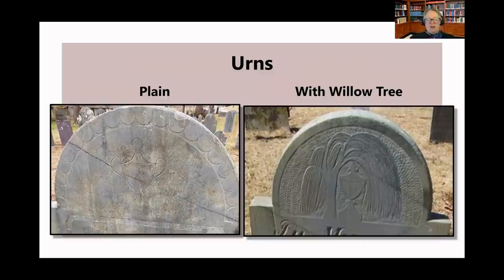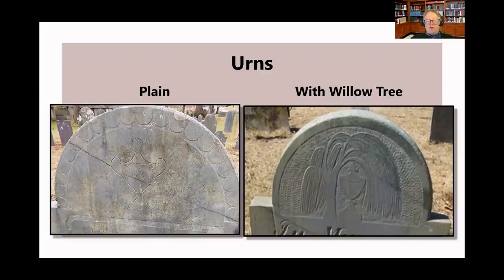The mid-18th century saw the development of urns on gravestones. Urns were symbolic reminders of the practice of cremation, where the body returns to dust but the soul is everlasting and with God. Toward the end of the century the willow tree became a prominent addition to the urn. The willow tree, with its downward arching branches touching the ground, represents eternal weeping and grief — the living left behind will always mourn the deceased who now rests with God.